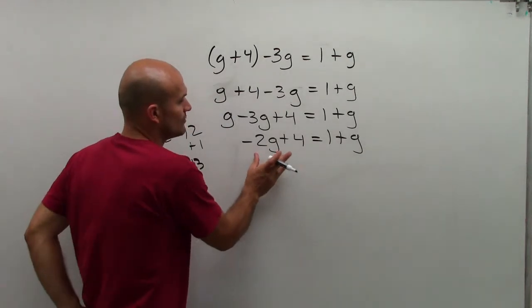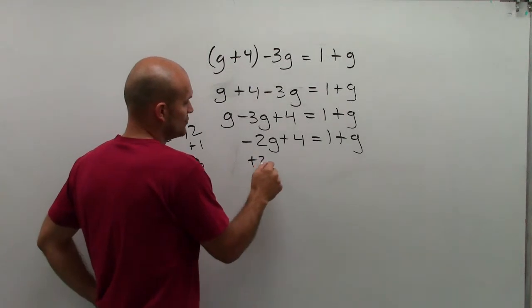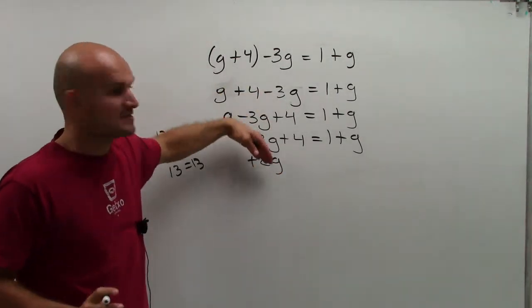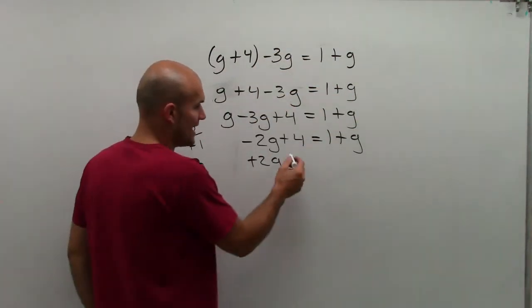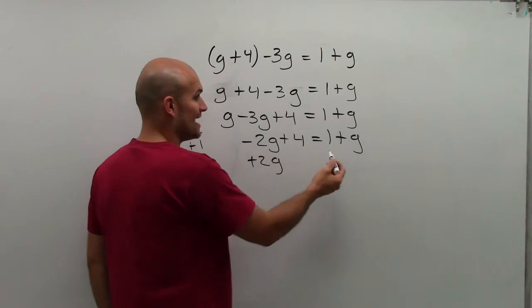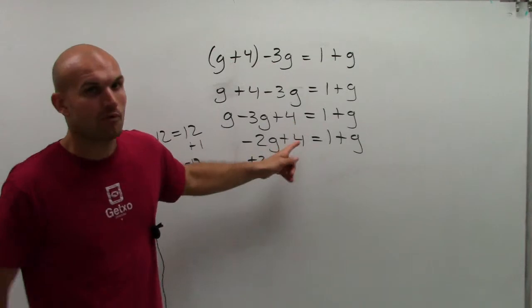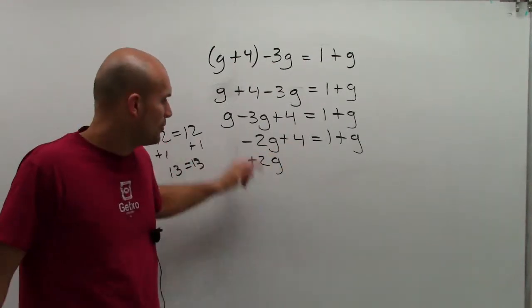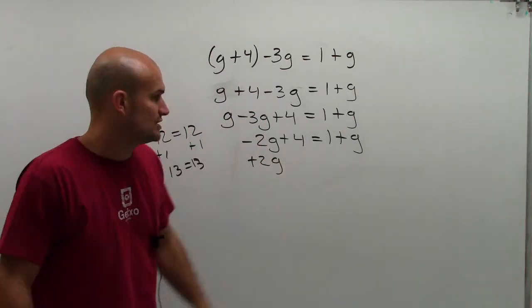How can I get rid of or undo negative 2g? I can add 2g. Remember, if I'm going to add 2g on the left side, I have to add 2g on the right side. You're going to want to take negative 2g plus 2g, and then I need to add 2g to the right side. I need to make sure that when I add 2g to the right side.